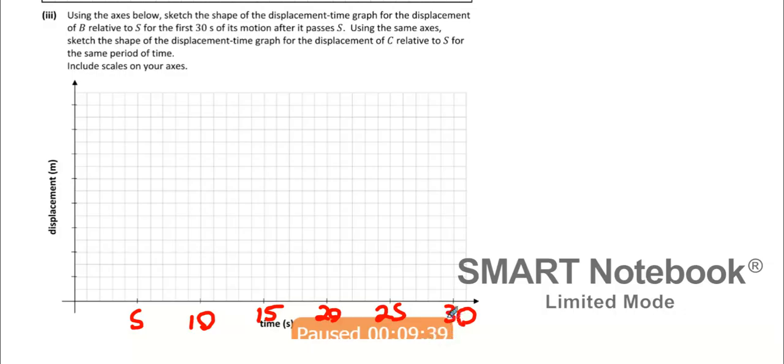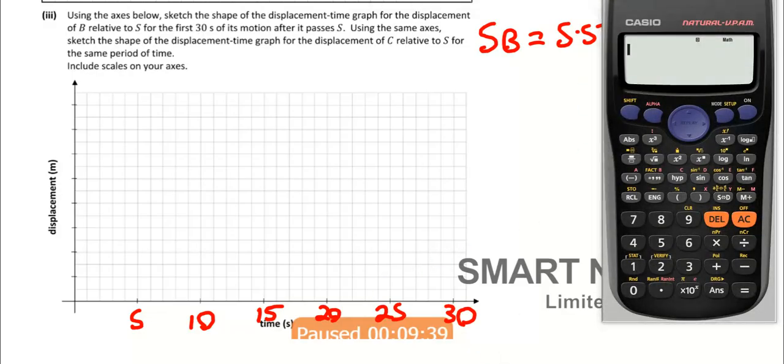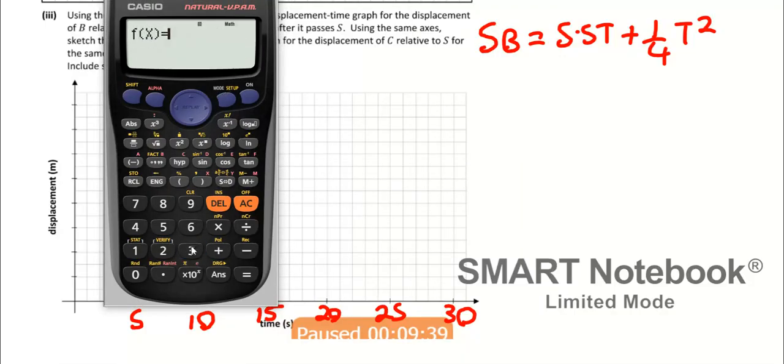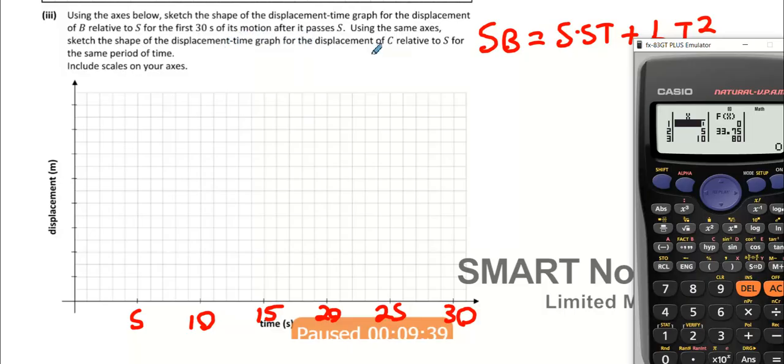Let's start off with the bike. What was the equation for the bike? It was 5.5T plus a quarter T squared. Put that into your table function: modes, table function, 5.5 alpha x plus one quarter x squared. Start at 0, end at 30, go up in steps of 5.